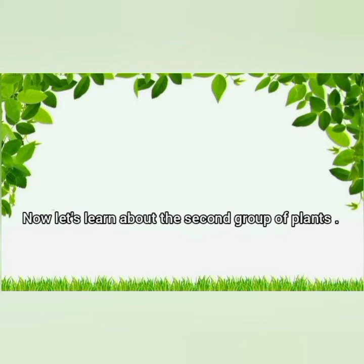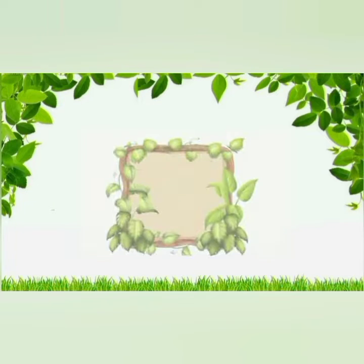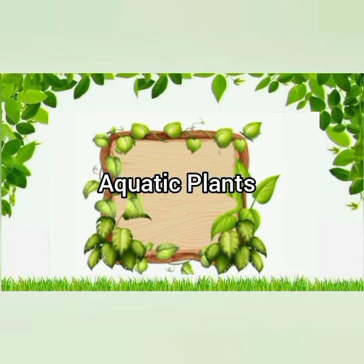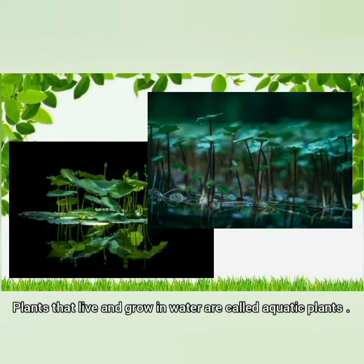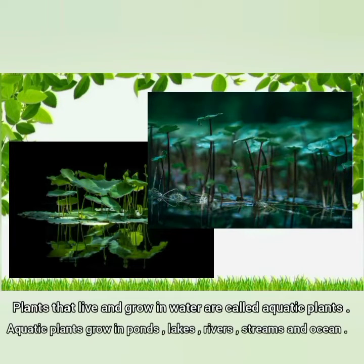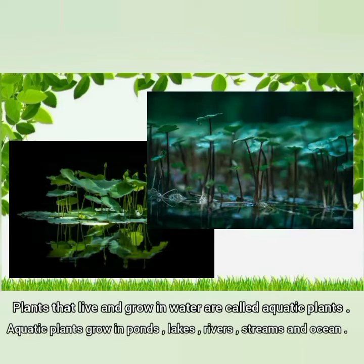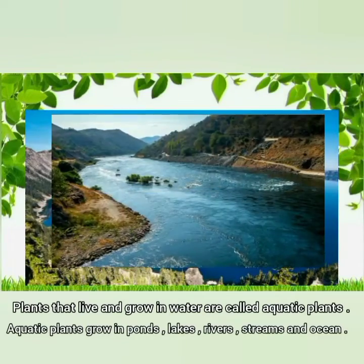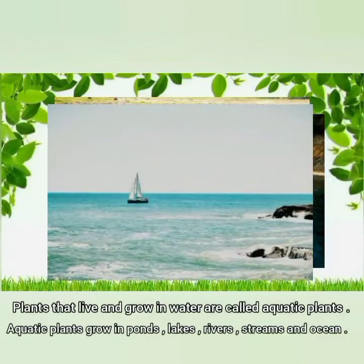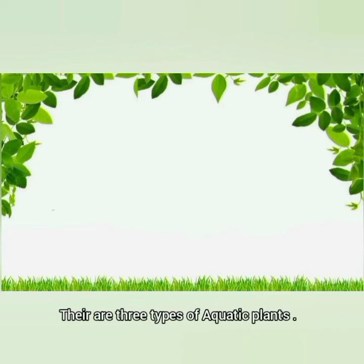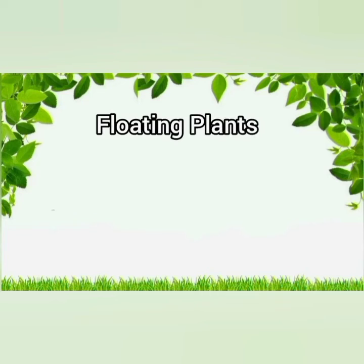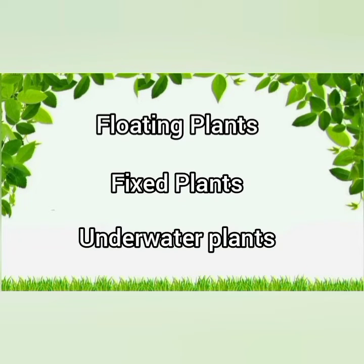Now let's learn about the second group of plants: Aquatic plants. Plants that live and grow in water are called aquatic plants. Aquatic plants grow in ponds, lakes, rivers, streams, and oceans. There are three types of aquatic plants: floating plants, fixed plants, and underwater plants.